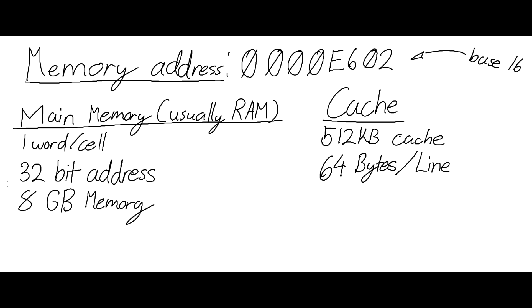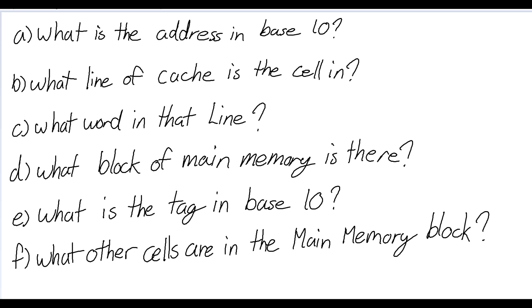So here's the information we are being given. Our main memory, sometimes referred to as RAM, has one word per cell, a 32-bit address, and 8 gigabytes of memory. Our cache has 512 kilobytes of memory, and in each line contains 64 bytes. Our memory address in hexadecimal is 0000E602. With the information presented to us, we have to answer these questions: What is the address in base 10? What line of cache is the cell in? What word is in that line? What block of main memory is there? What is the tag in base 10? And what other cells are in the main memory block?